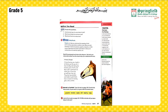Exercise E: Words in context. Scan the text on pages 38 to 39 and circle these words as you read. Try to guess what the words mean: powerful, intruders, supply, seal, toppling, launch. Exercise M: Look at the visuals on pages 38 to 39. What animals will you learn about in the text?